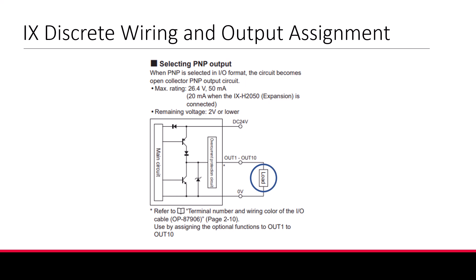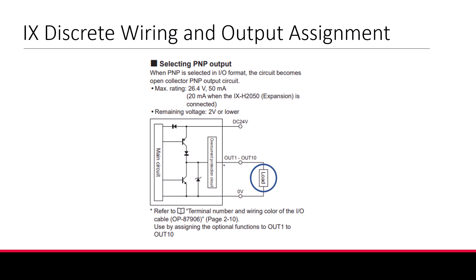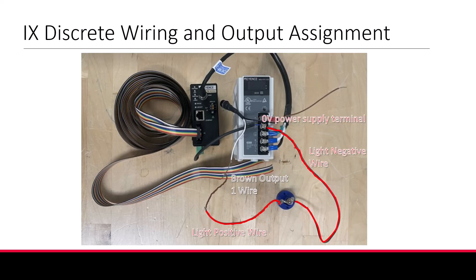Wherever you send your output is referred to as your load in the wiring diagram. It will have to connect to your output wire and the 0V terminal of your power supply. Typically you'll wire your output signal to a PLC, stack light, alarm, or any device that can accept a discrete signal. For this demonstration we'll wire our output to a light, which will serve as our load. We'll first connect our brown output 1 wire from the IO cable to the positive wire of the light. Next we'll wire the light's negative wire to the 0V of our power supply. That completes the hardware and wiring setup for our input and output.